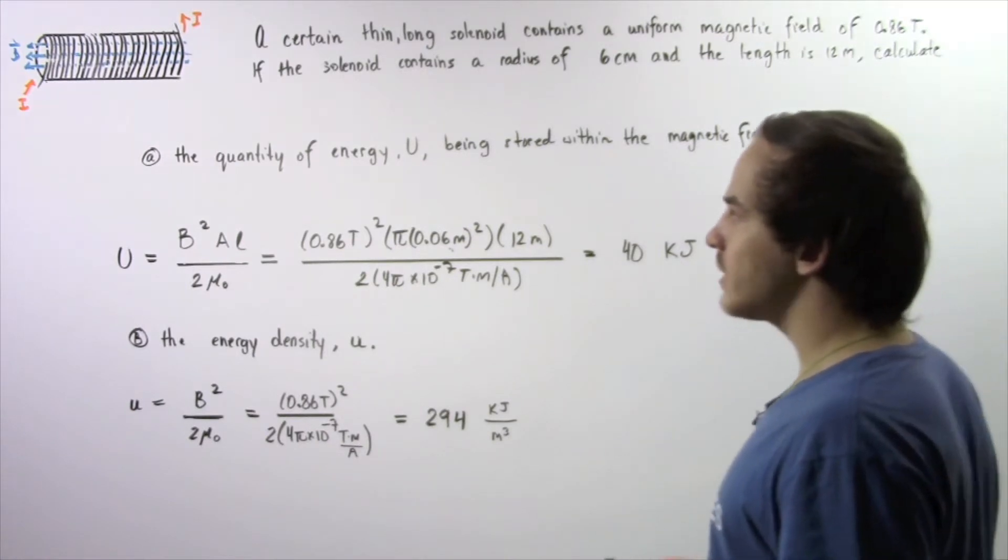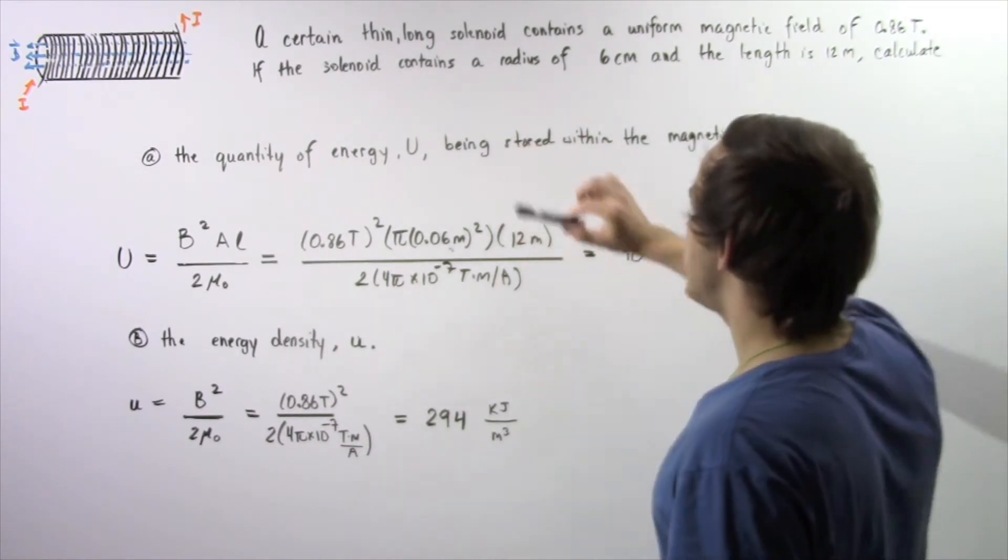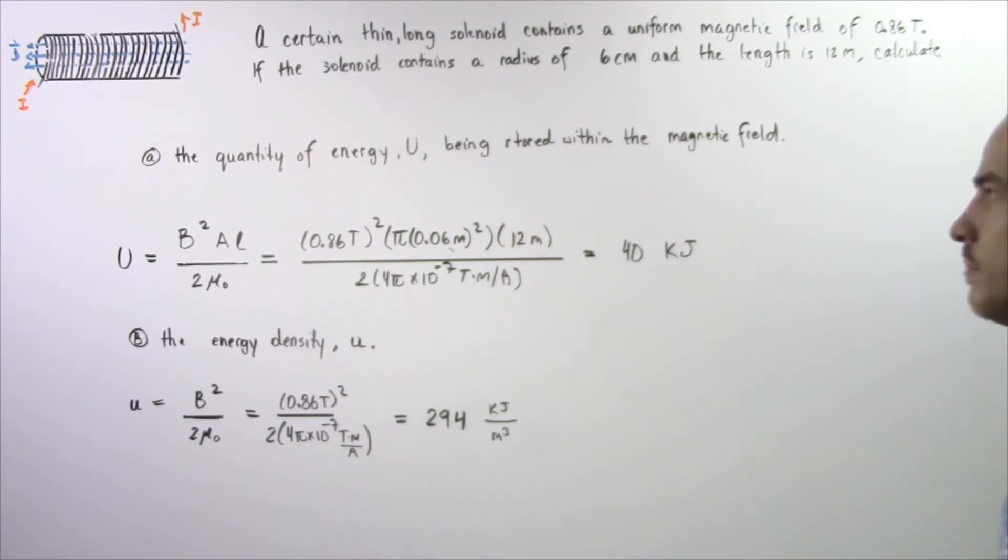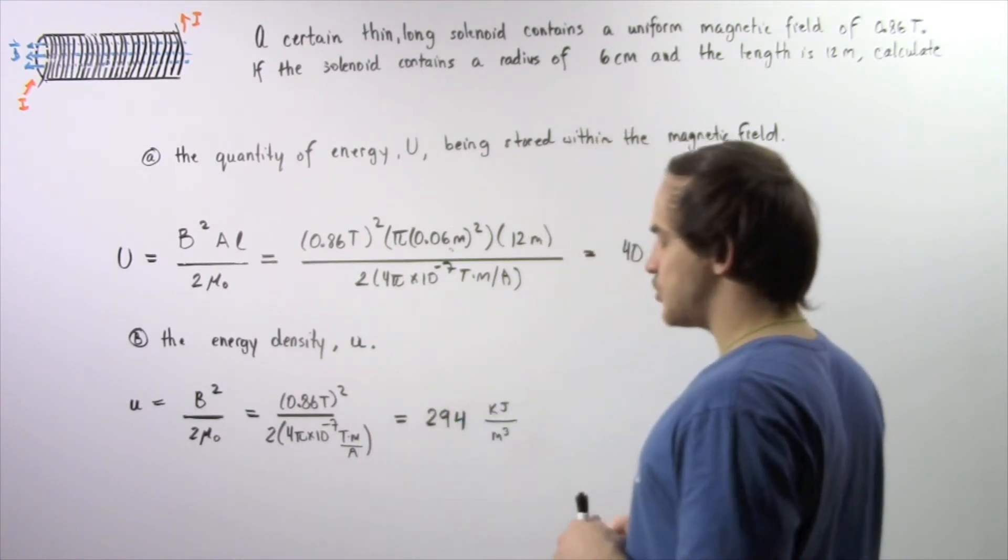calculate in part A the quantity of energy U that is being stored within the magnetic field, and in part B calculate the energy density given by lowercase u.